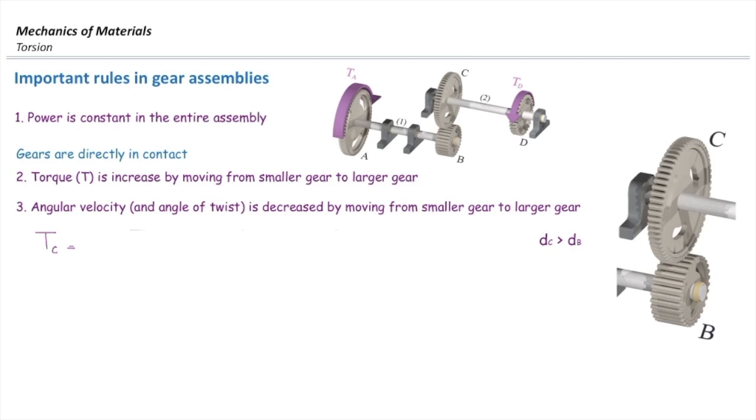What is the gear ratio? Is gear ratio DC over DB or DB over DC? So what I know is torque in gear C should be larger than torque in gear B, based on the second rule.